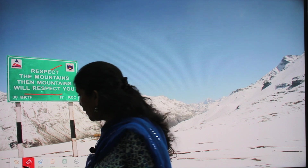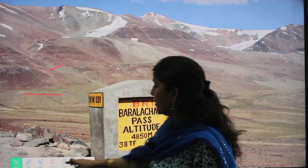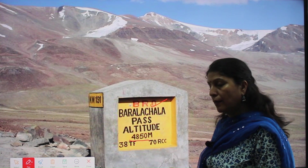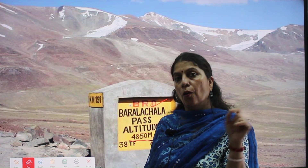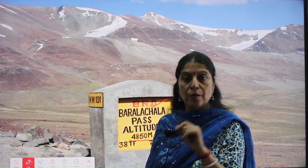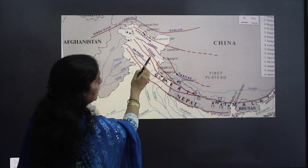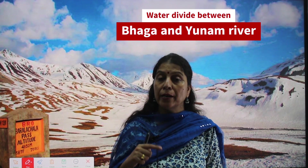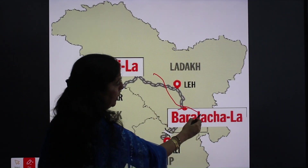The next important pass is Baralaccha pass, located at 4850 meters above sea level. This pass is located along the Leh-Manali highway and connects the Leh district of Ladakh to the Lahaul district of Himachal Pradesh. It is located in the Zanskar range. Baralaccha pass serves as a water divide between the Bhaga and Yunam rivers. Bhaga is one of the important tributaries of the Chenab river.